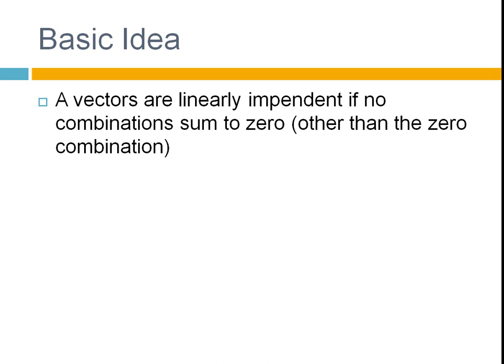So the basic idea is that if vectors are linearly independent, no combination will sum to 0 other than the 0 combination. To write that mathematically, you're saying that some constants times each vector will not sum to 0. There is no combination of these C's that will give you 0 for all, except for just the 0 combination.